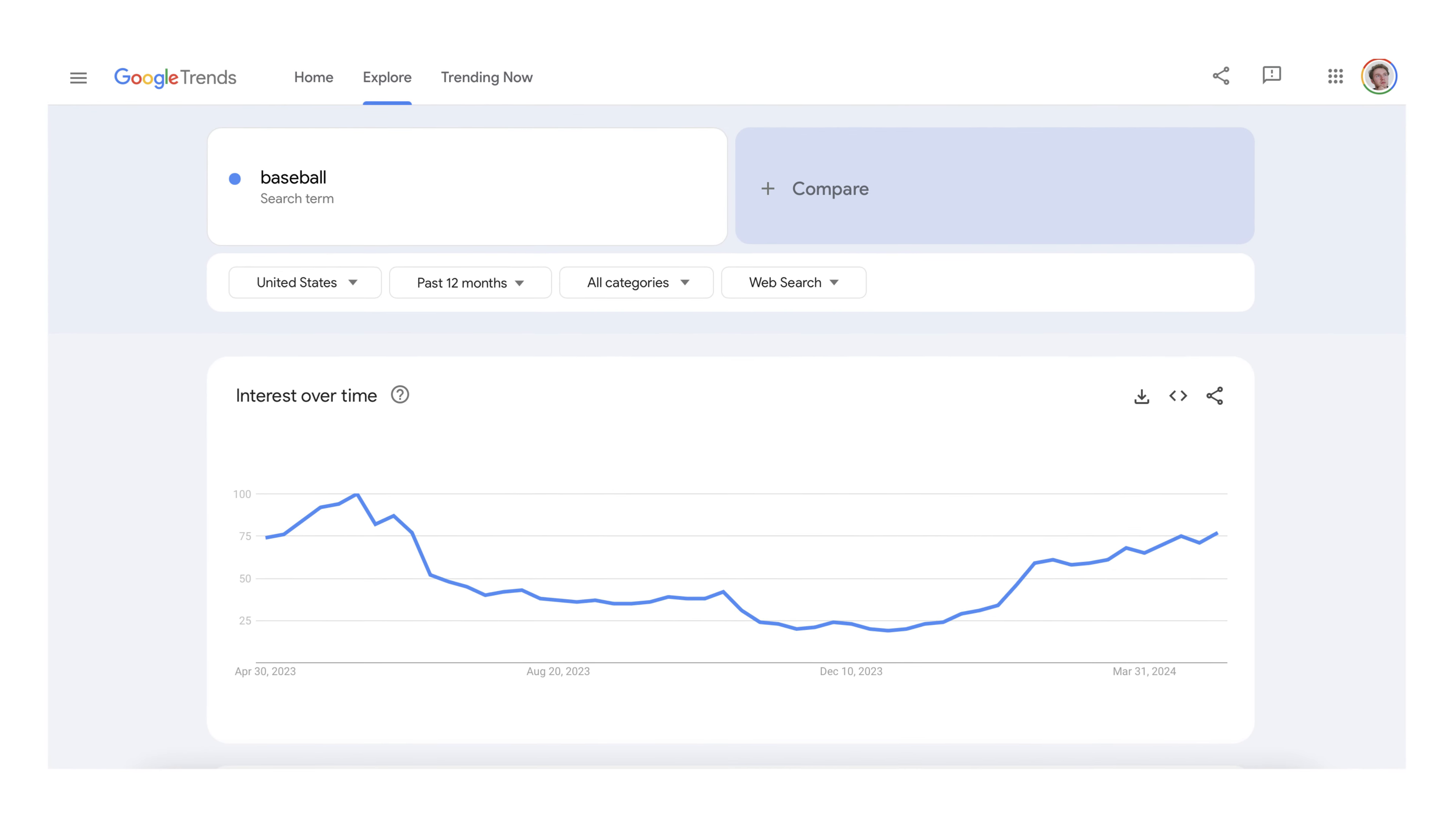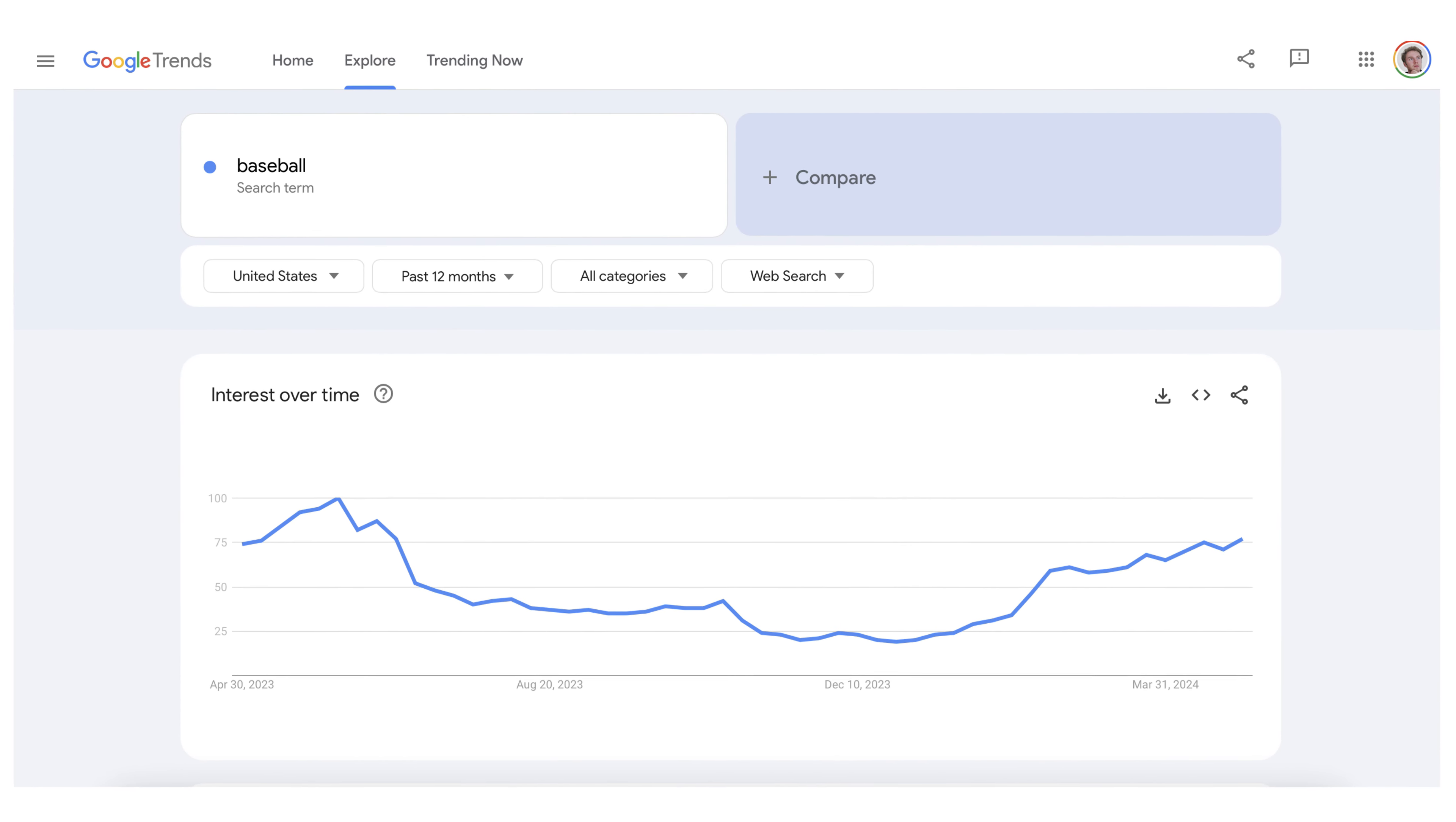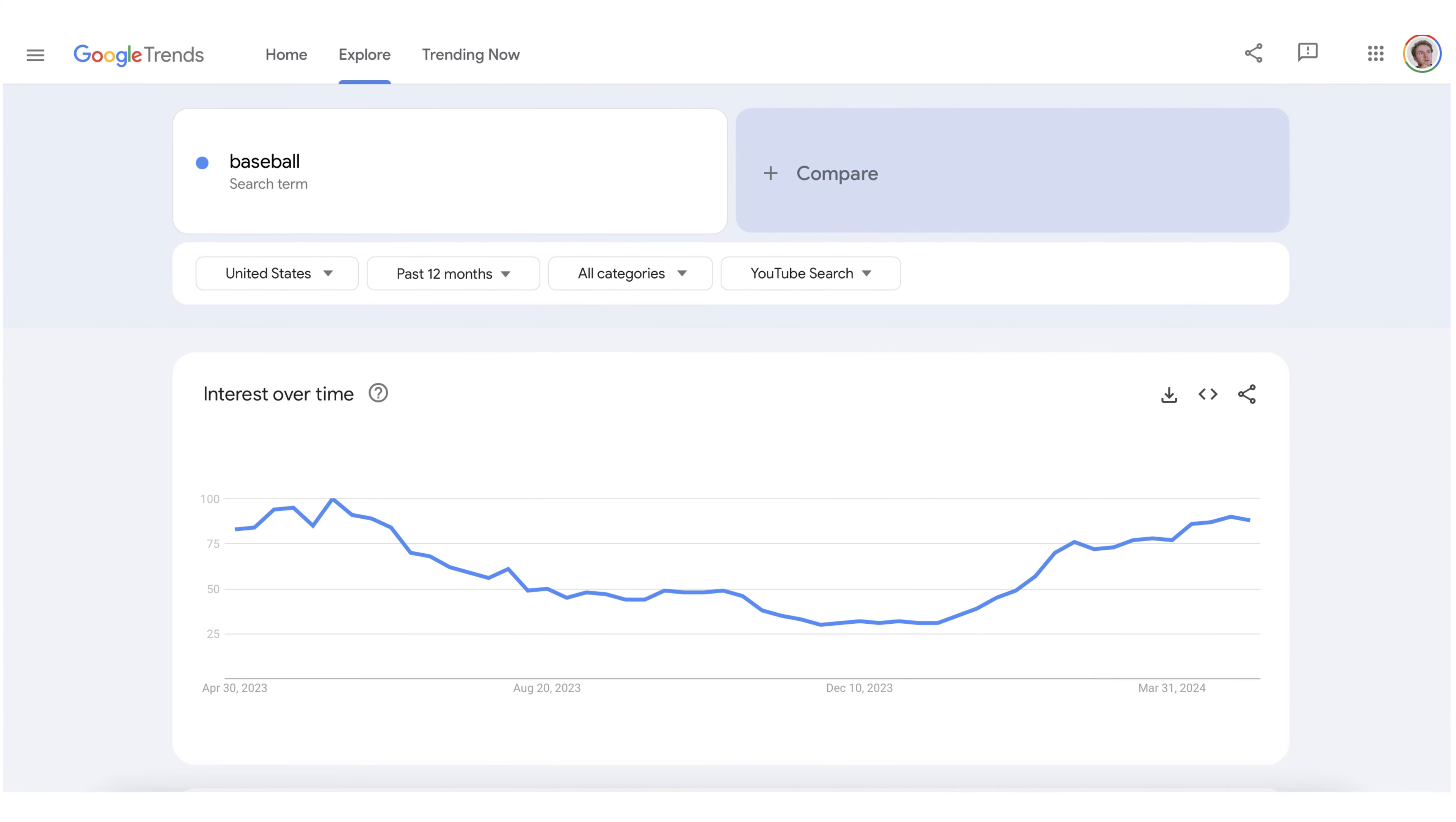The first thing that we need to analyze is the TAM or the total addressable market. This means the amount of people that are actually interested in your topic. So let's say that you're interested in baseball. The first step would be to go on Google Trends and then just look up your keyword. Now change the graph to the last 12 months, change the web search to YouTube search. Looking at this graph, there is clearly a huge interest in baseball on YouTube. And as you can see, the interest level is already past 90, so it passes level one by a mile.